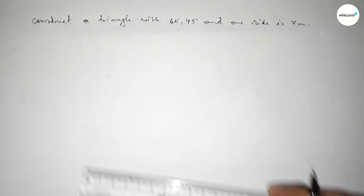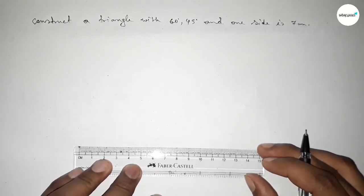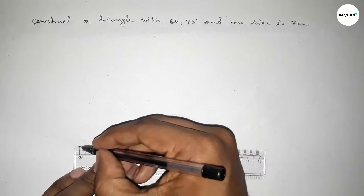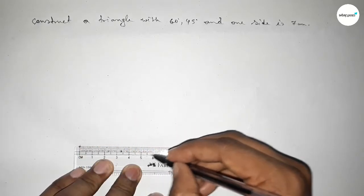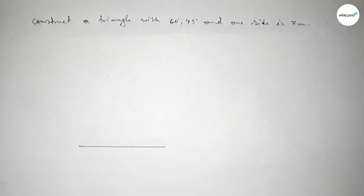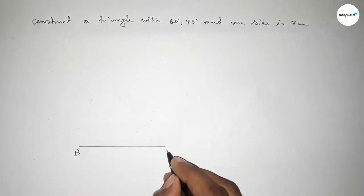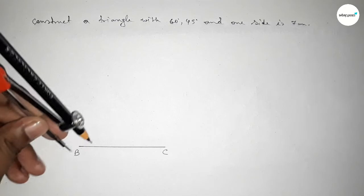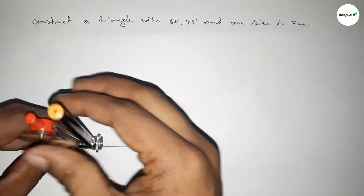First of all, we have to draw a line of length 7 centimeters. This is the 7 centimeter line, taking point B on one end and point C on the other end.